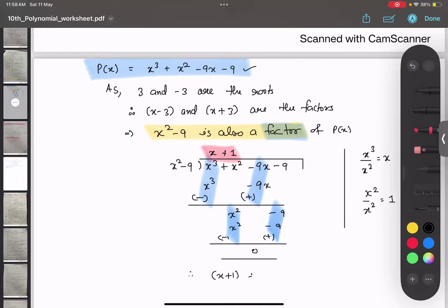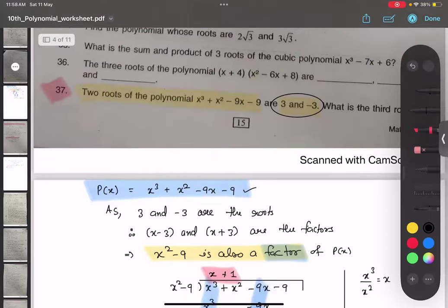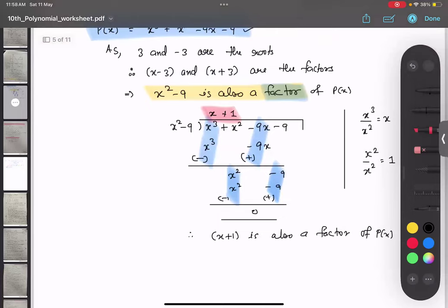x+1 is also a factor of P(x). The question was asking what is the third root. Therefore, shifting to the other side, x = -1. Therefore, -1 is the third root.